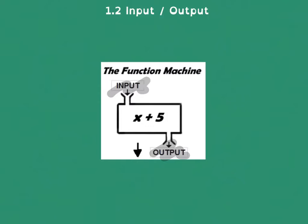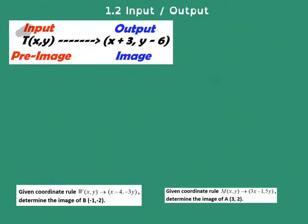Now let's take a look at how this all applies to geometry. In geometry, we have an input and an output machine as well, but it's called a coordinate rule. And the way it works is that it basically is going to tell you when you take a point, x and y, exactly what you should do to that point.